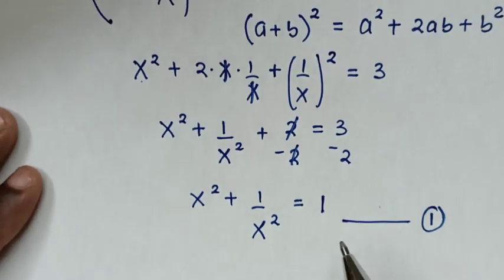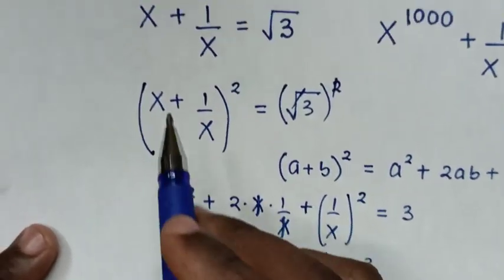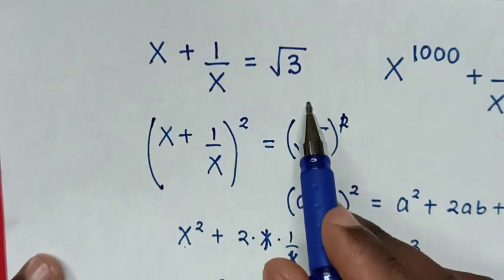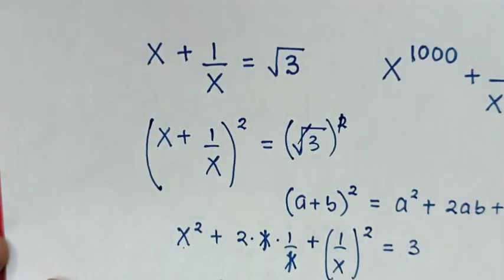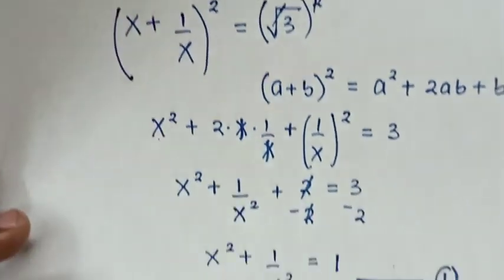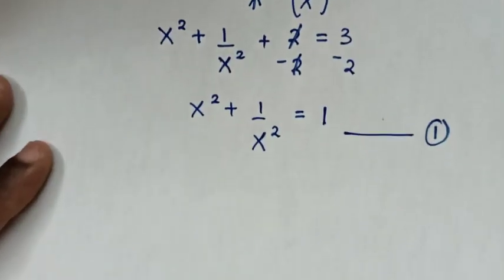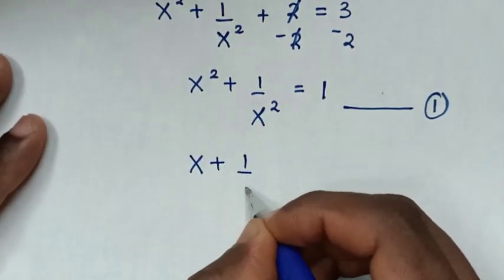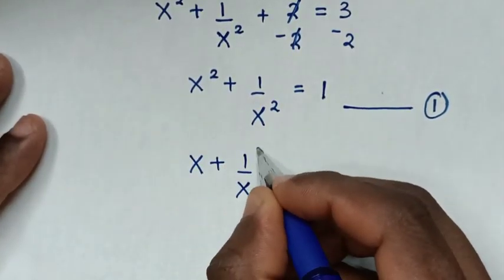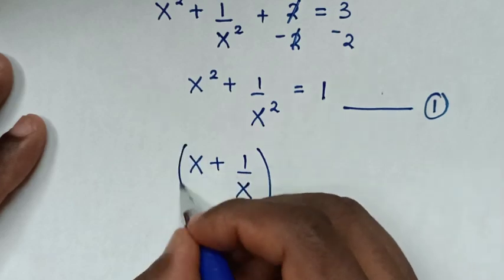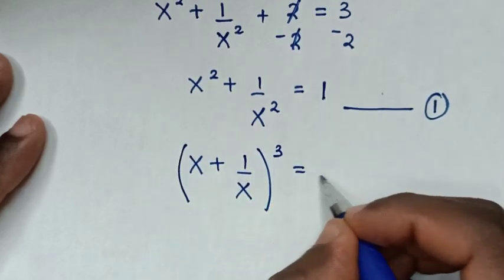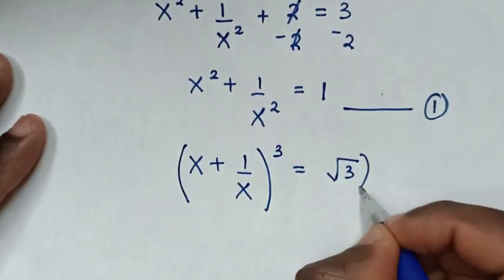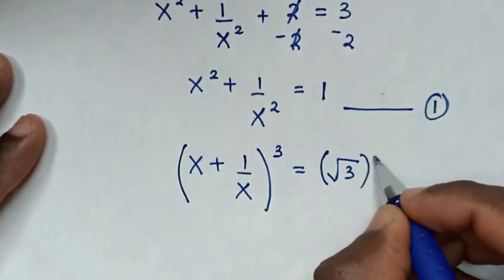Then in the next step, from our original equation, we'll cube both sides. So it will be: (x plus 1 over x) cubed is equal to (square root of 3) cubed.